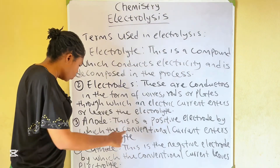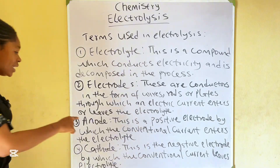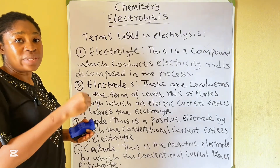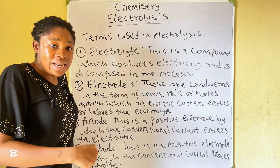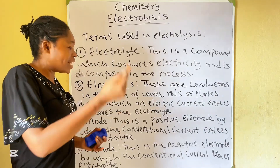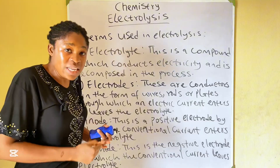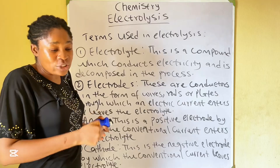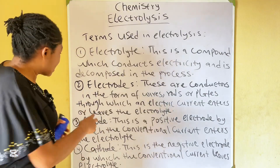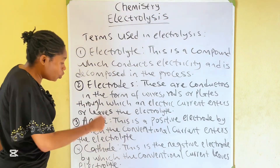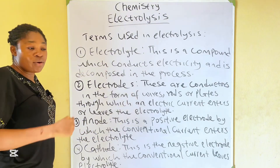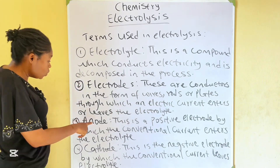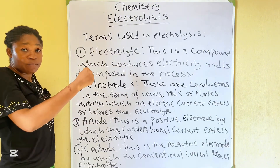Anode. This is the positive electrode by which the conventional current enters the electrolyte. Current enters the electrolyte through the anode, and electrons leave through the anode. This anode is also connected to the positive terminal of the electric supply — if you're using a battery, the anode will be connected to the positive terminal of that battery.